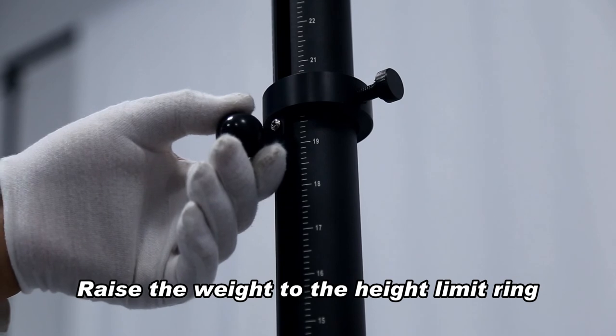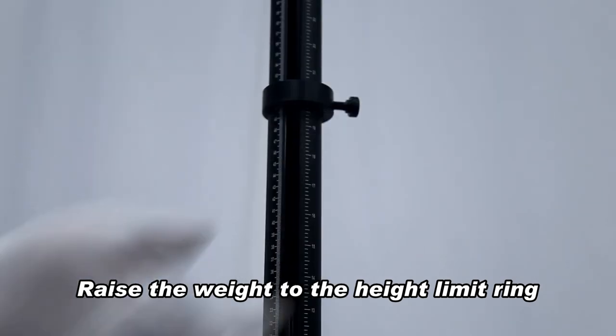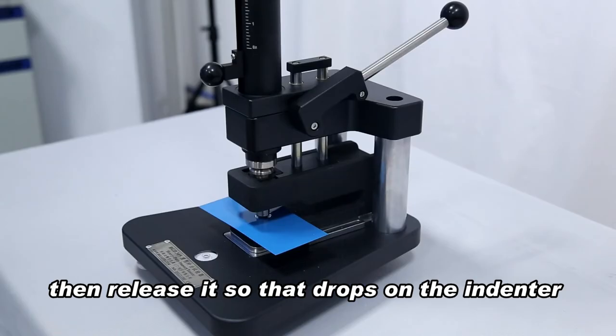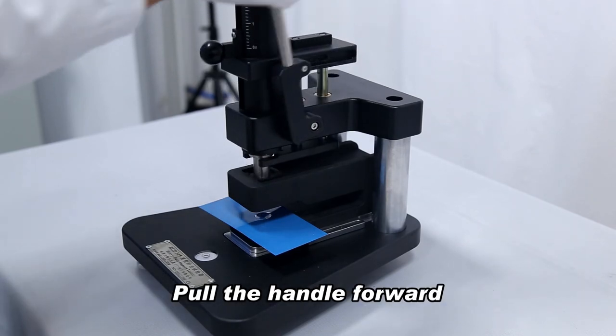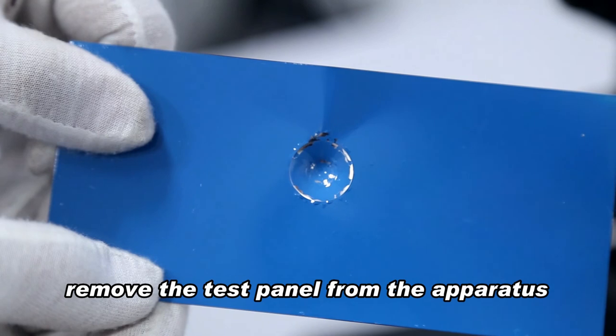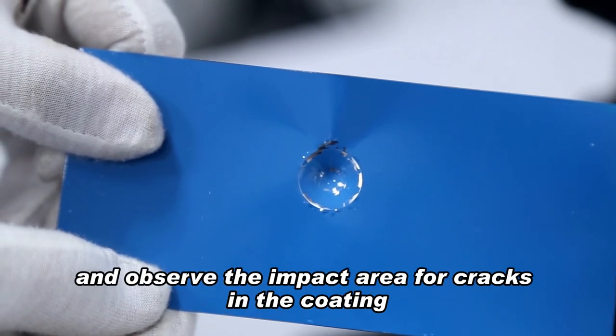Now raise the weight to the height limit ring, then release it so that it drops on the indenter. Pull the handle forward, remove the test panel from the apparatus, and observe the impact area for cracks in the coating.